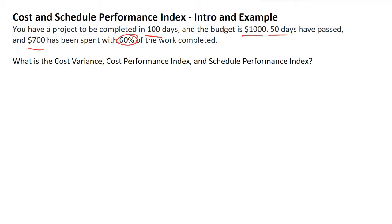Our goal here is to be able to go to management and tell them what is the cost variance, cost performance index, commonly abbreviated as CPI, and the schedule performance index, denoted as SPI.